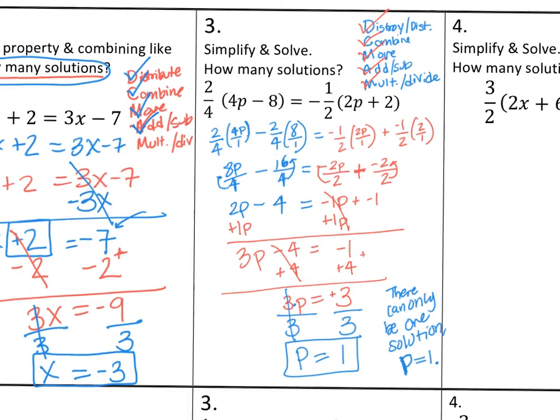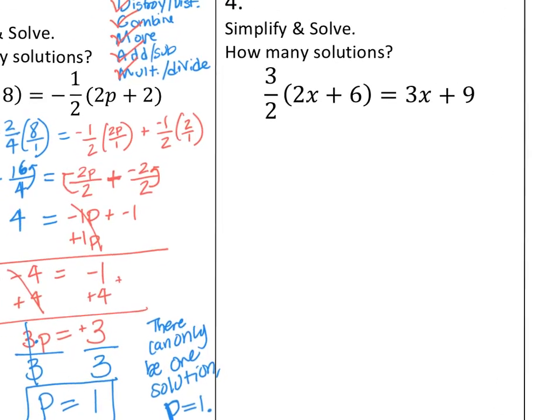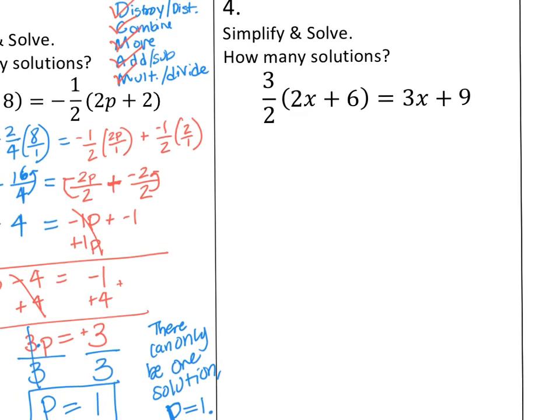Last but not least, number 4. And I'm going to challenge you guys to start it off. Start off 3 halves times 2x plus 6. Just do the left side right now. So I'm going to distribute 3 halves to 2x and 3 halves to 6. So we have 3 halves times 2x over 1 plus 3 halves times 6 over 1. And the reason I'm putting 1 is because I can put a 1 under every number, and it wouldn't change the value. And then on the right-hand side, I just have this 3x plus 9.